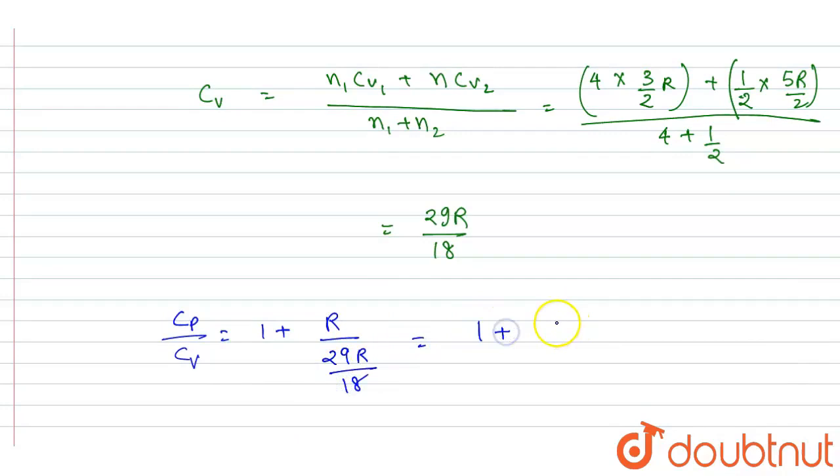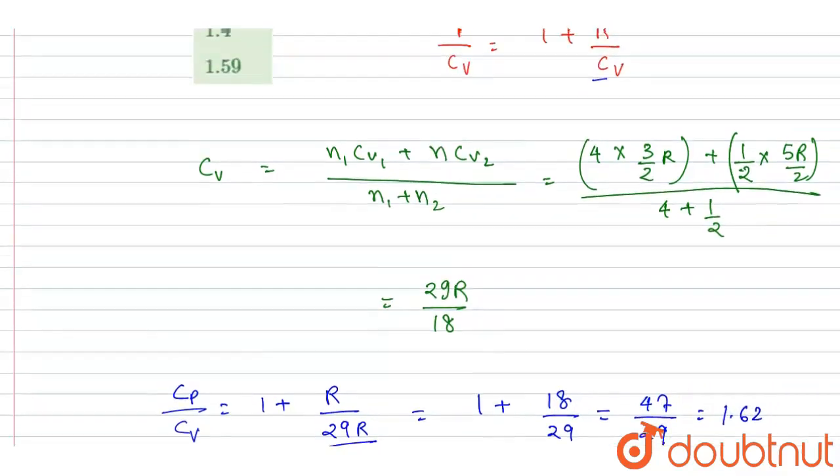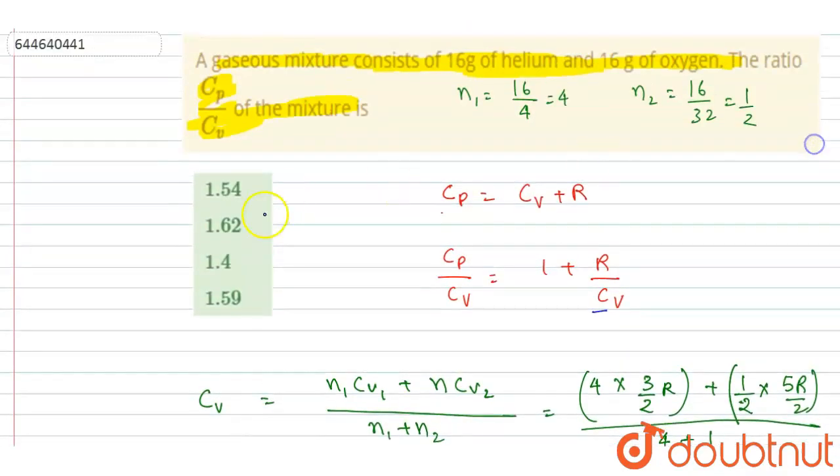So 29 by 29 plus 18. So 29 plus 18, it will be 47 by 29, and this is 1.62, and this is the answer of this question. I can check for the option here, B is the correct option. Thank you.